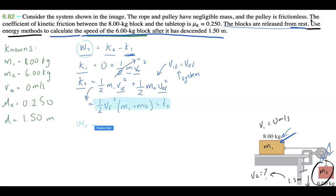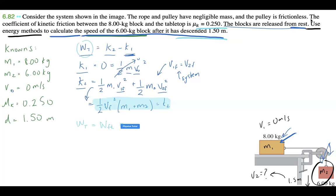Now let's talk about the total work on this system. Two things contribute: work done by the force of kinetic friction, and work done by gravity.